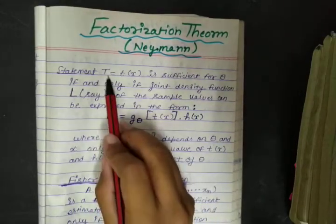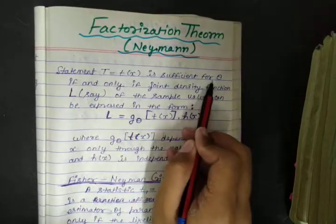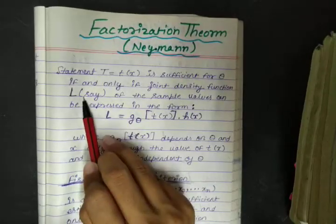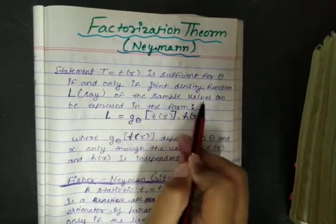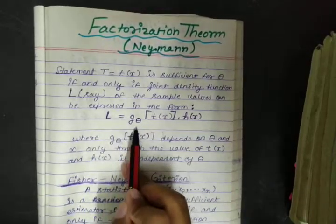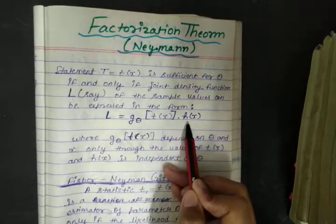The statement is: if t is equal to t of x which is a sufficient estimator for theta if and only if joint density function L of sample values can be expressed in the form L is equal to g_θ[t(x)] multiplied by h(x).